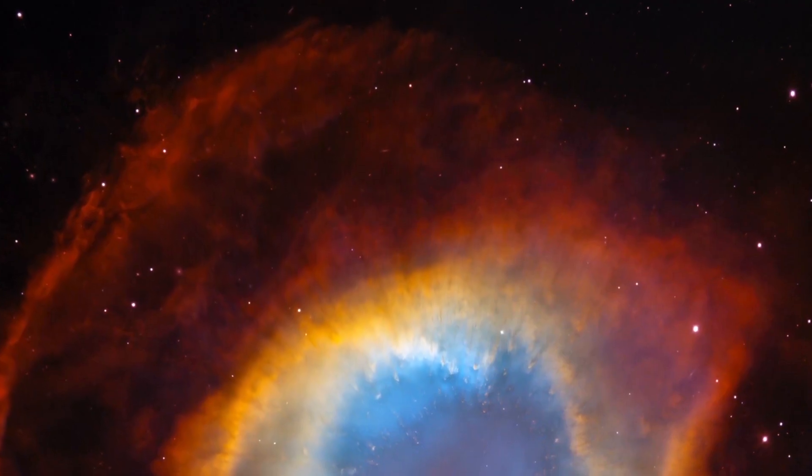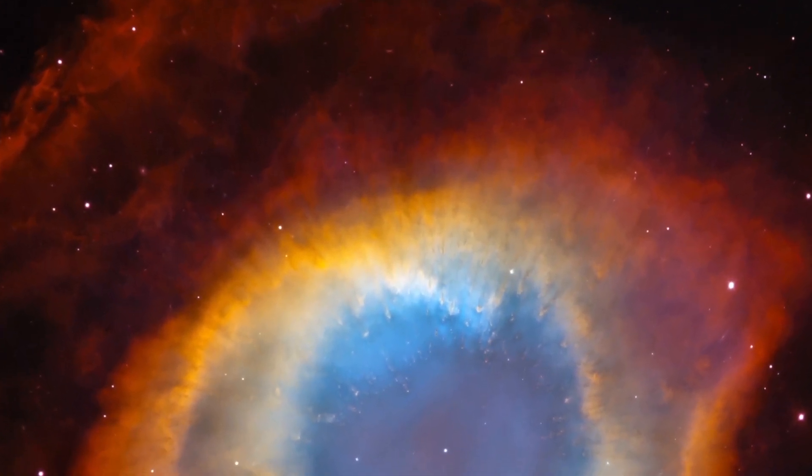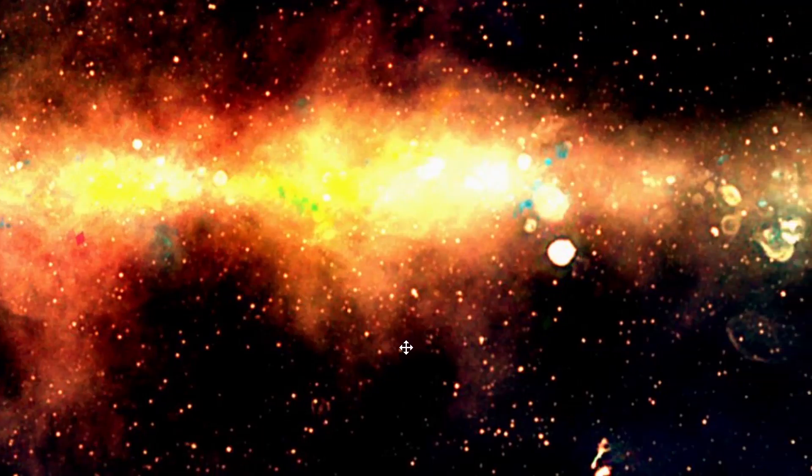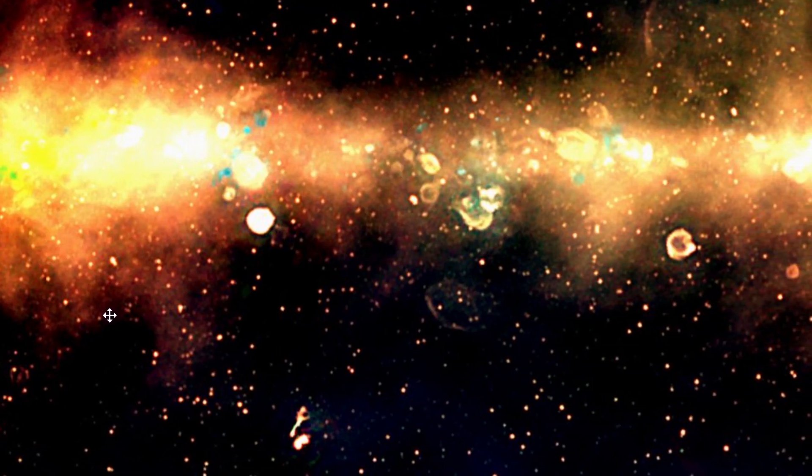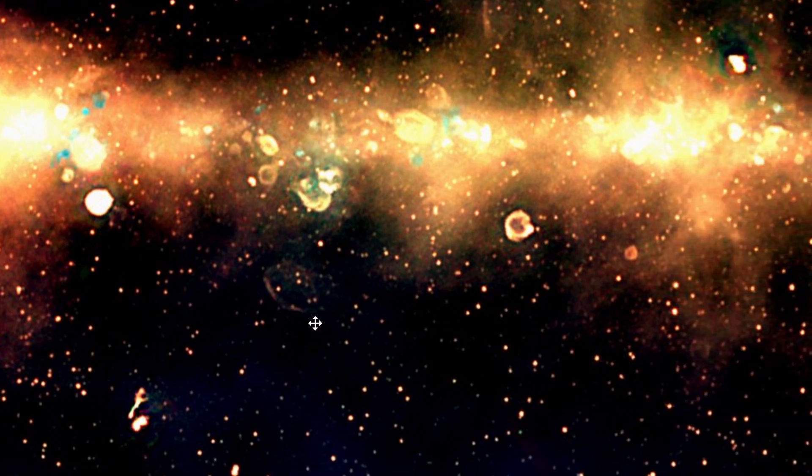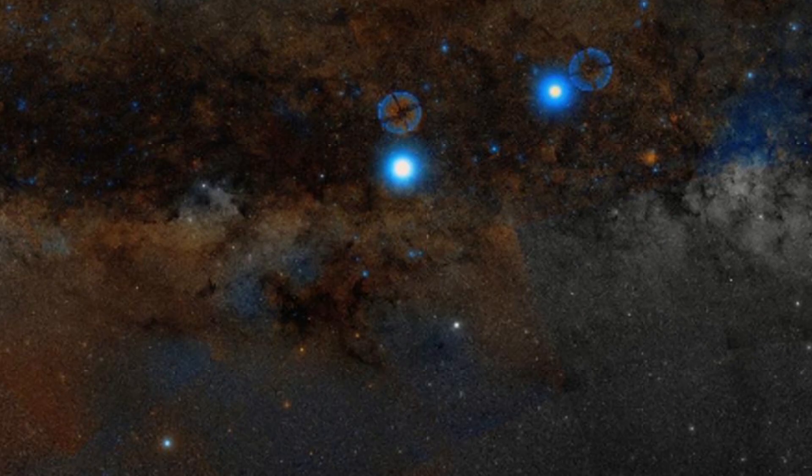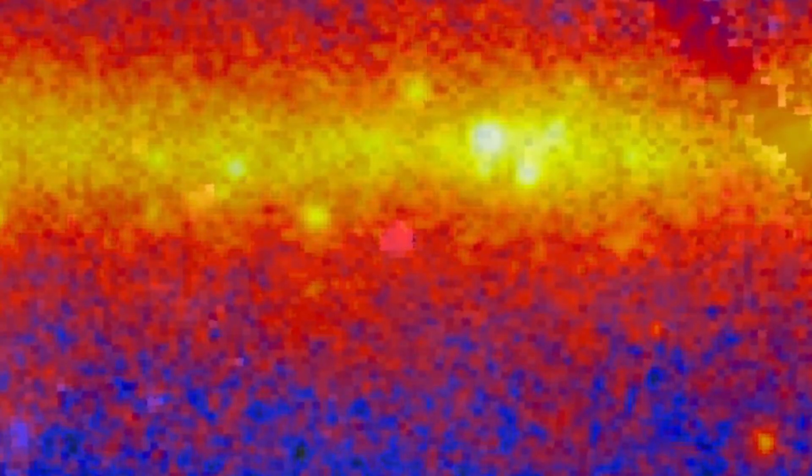Basically the only logical explanation left was a supernova remnant, because we know that they do produce relatively circular formations and they can produce a lot of radio light, with certain types of remnants potentially only visible in radio light as well. As a matter of fact, if you were to look at a typical radio map of the Milky Way galaxy, you would actually see quite a lot of various circular objects across the galactic plane. Every single one of these galactic circles is a remnant from a supernova, and the majority of them are not visible in other frequencies - nothing in visible light, nothing in gamma rays, and only some are visible in x-ray. This suggests that certain supernovae in theory could produce radio emissions only and could produce these very large radio circles.